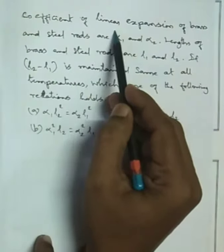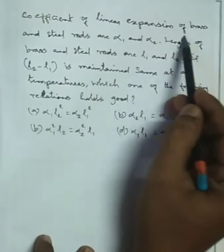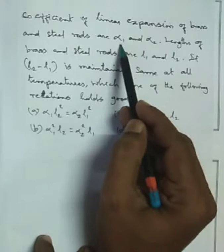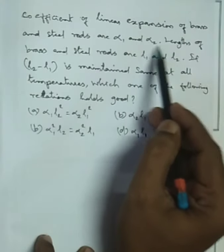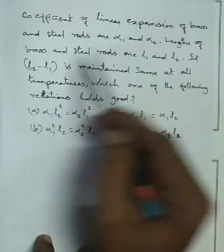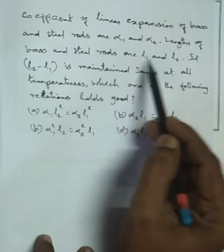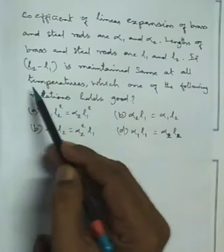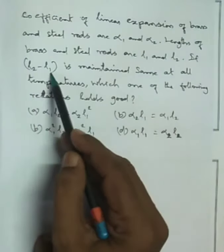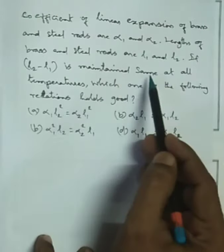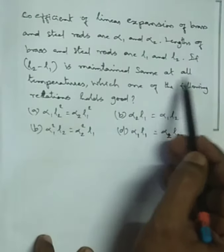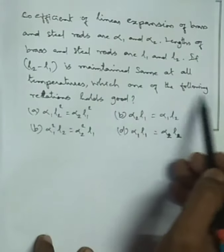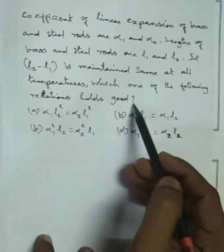Coefficient of linear expansion of brass and steel rods are alpha-1 and alpha-2. Lengths of brass and steel rods are L1 and L2. If L2 minus L1 is maintained the same at all temperatures, which one of the following relations holds good?